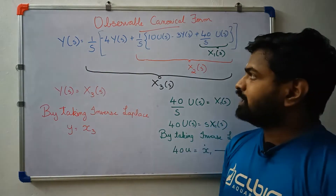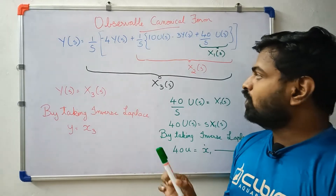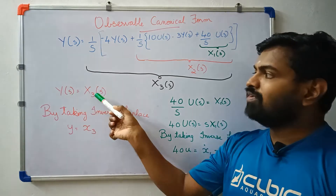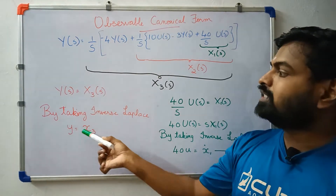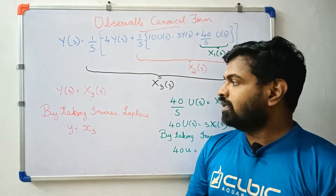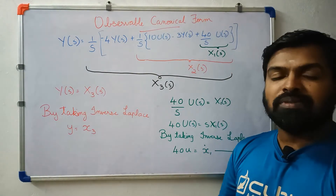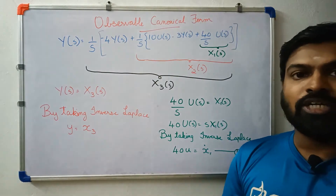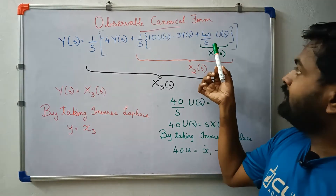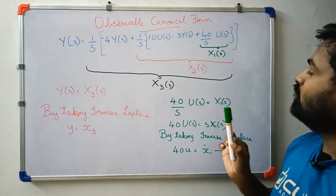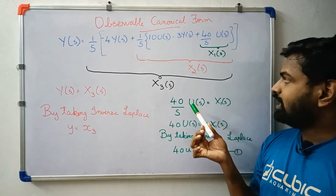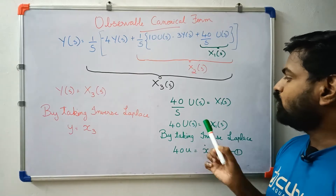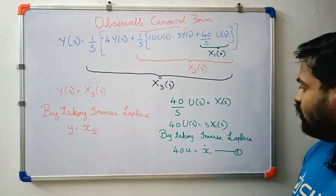Y(s) is equal to x3(s). Now let's substitute x3(s) and look at the state equations. We cross-multiply: 40 U(s) equals s times x1(s). Therefore x1 dot equals 40u.